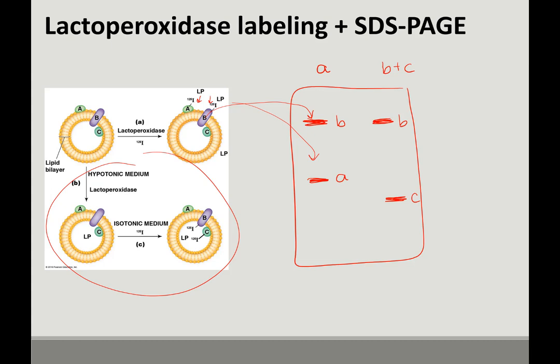You know that protein A is on the outside of the cell. And that protein C faces the inside of the cell. So a protein that gets labeled in both situations is transmembrane. The other proteins will be either on the outside or on the inside, depending on what circumstances they were labeled.